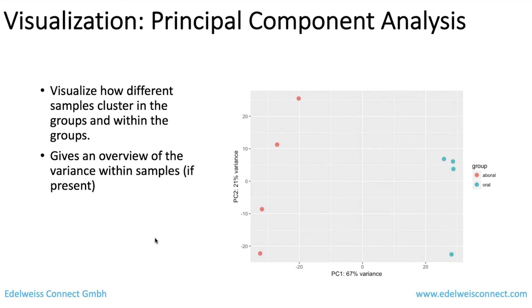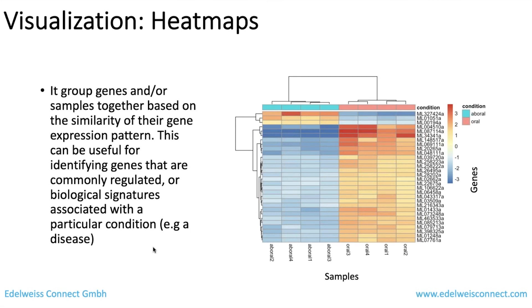Heat maps are another visualization method that shows how different genes are expressed across conditions or replicates. Genes that are highly expressed appear in the upper part of the color bar, while down-expressed genes appear in the lower part. You can extract the most highly expressed genes and observe gene expression patterns across different replicates or conditions — for example, how expression varies from condition one to condition two.